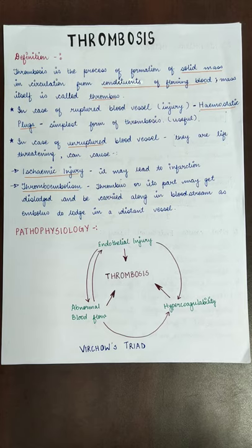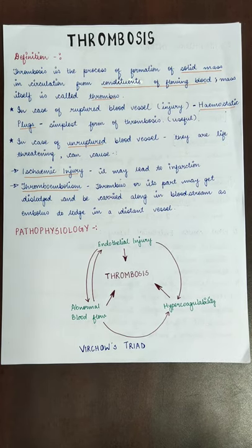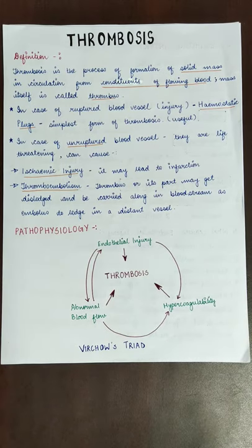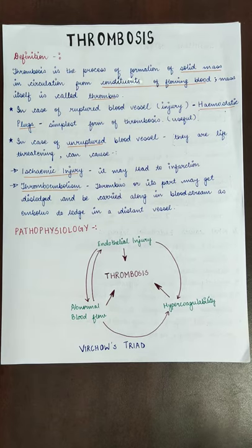Thrombosis and its parts get dislodged and are carried along in the bloodstream as an embolus. That which is carried in the bloodstream is called an embolus. It lodges in a distant vessel — if it goes and settles somewhere else, it will also create problems. These are the two effects when thrombosis forms in unruptured blood vessels.